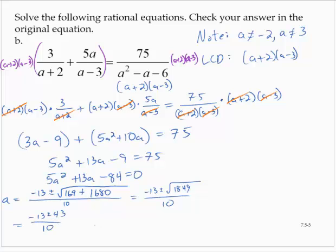All right, so that gives us two values. Let's see, I'd have a is equal to negative 13 minus 43 over 10. Negative 13 minus 43, that's negative 56 over 10, which is negative 28 fifths.